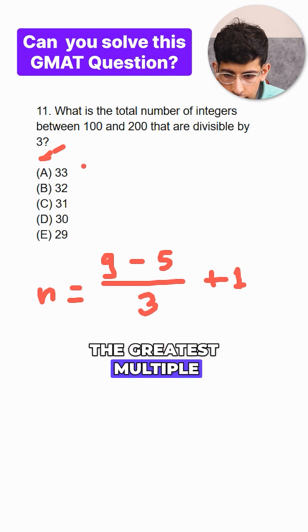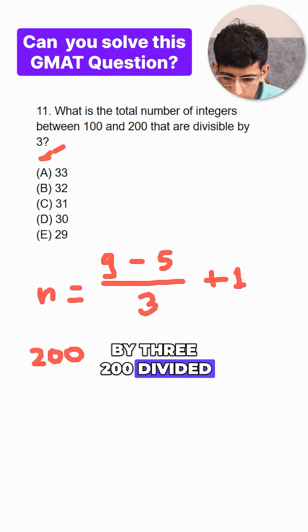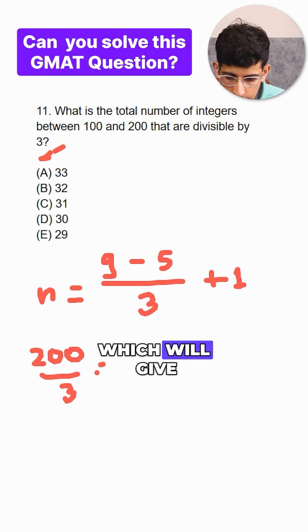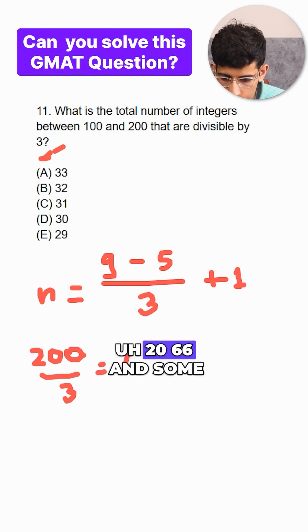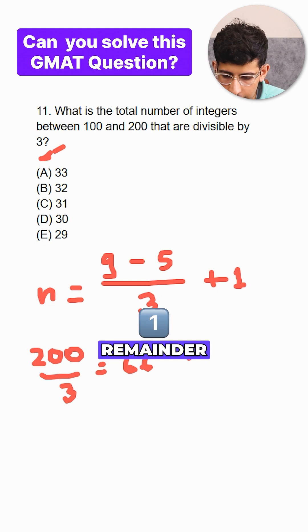So what is the greatest multiple between 100 and 200 which is divisible by 3? 200 divided by 3 which will give us 66 and some remainder.